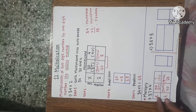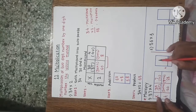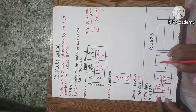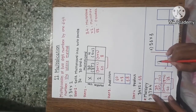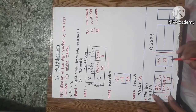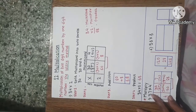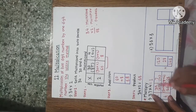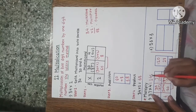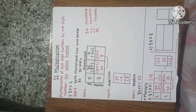Now the next step is addition. We have to add these two results: 120 plus 28. 0 plus 8 is 8, 2 plus 2 is 4, and 1 remains. So we get the answer 148.